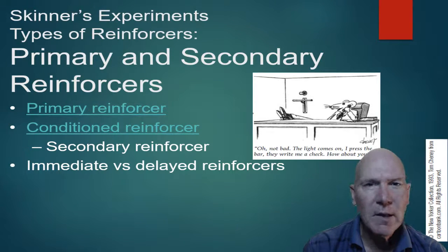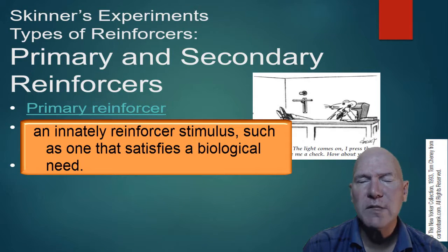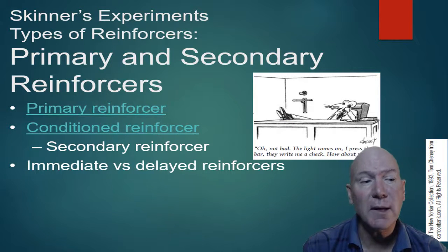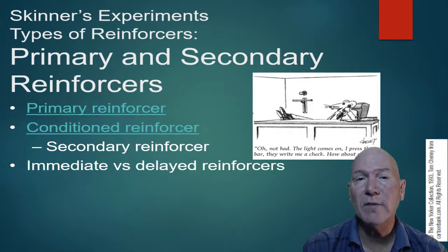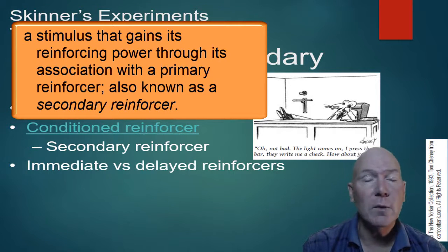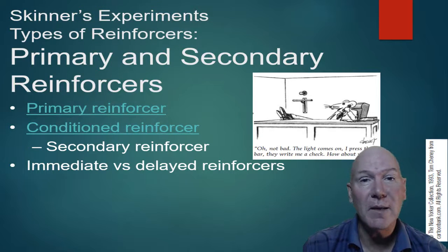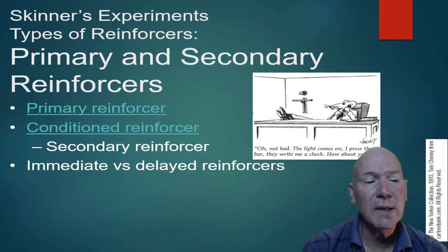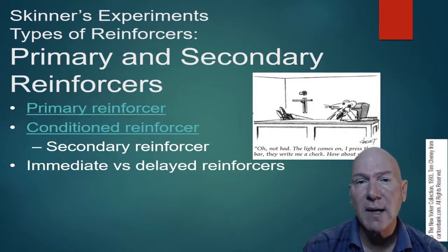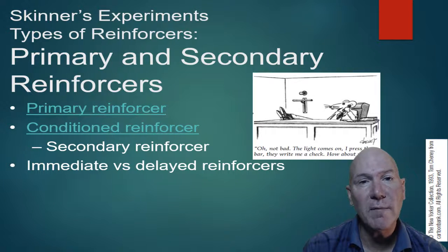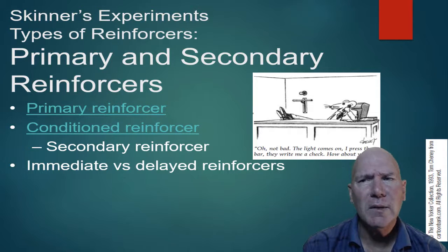Types of reinforcers include primary reinforcers — naturally reinforcing things like food, drink, and sex. Conditioned reinforcers are learned and may represent primary reinforcers — for example, money, whose buying power is the actual reinforcer. Immediate reinforcers are more powerful than delayed ones. In fact, delayed reinforcement can lead to superstitious behavior if too much time passes between the actual behavior and the reinforcement, causing the wrong behavior to be reinforced.